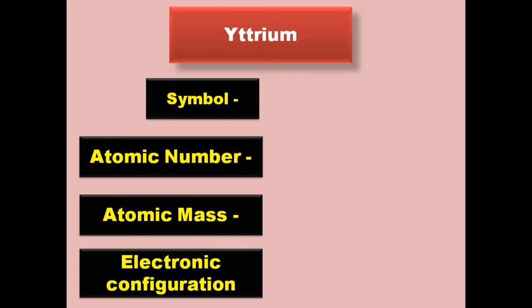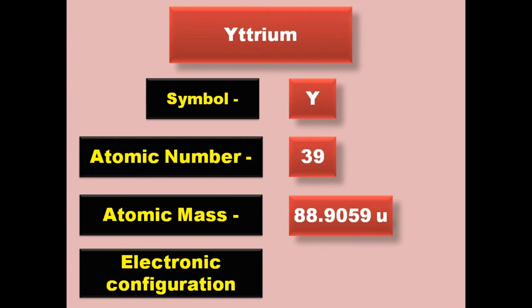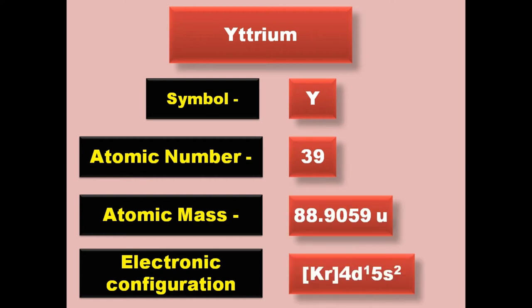Yttrium has symbol Y, atomic number 39, atomic mass 88.9059, electronic configuration [Kr] 4d1 5s2. Yttrium is a transition metal and exists in solid form at room temperature.